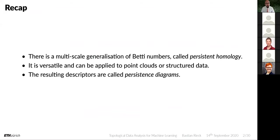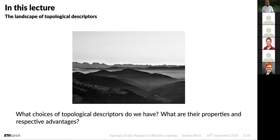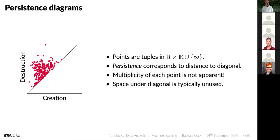Let's do a quick recap. We found a multi-scale generalization of Betti numbers called persistent homology. It's rather versatile and can be applied to point clouds or structured data such as graphs. The resulting descriptors are called persistence diagrams — they contain information about the creation and destruction of topological features along certain thresholds. Now we'll take a broader look at the landscape of topological descriptors.